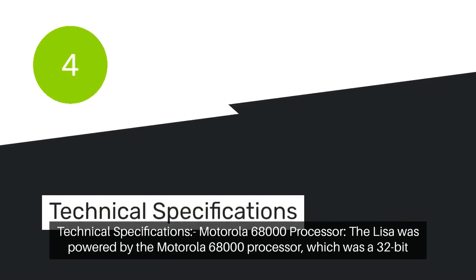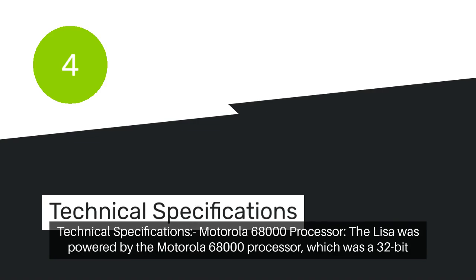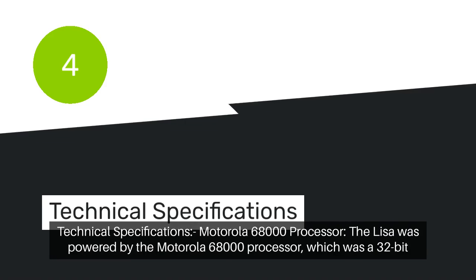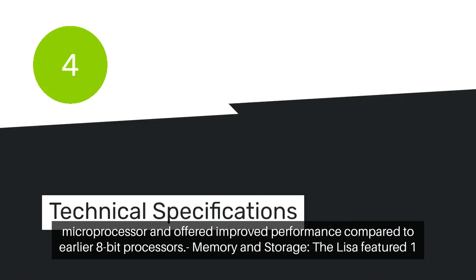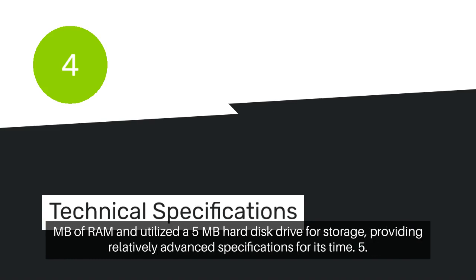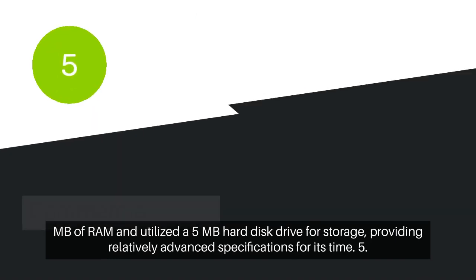Technical Specifications: The Lisa was powered by the Motorola 68000 processor, a 32-bit microprocessor that offered improved performance compared to earlier 8-bit processors. The Lisa featured 1MB of RAM and utilized a 5MB hard disk drive for storage, providing relatively advanced specifications for its time.